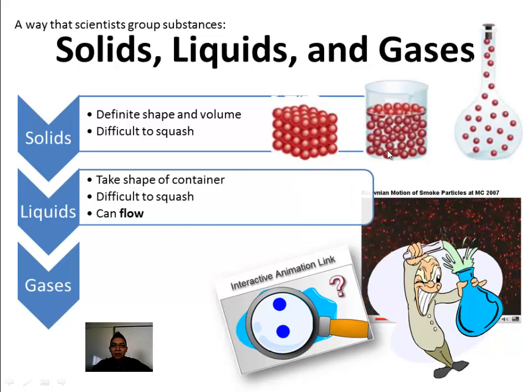Liquids take the shape of the container. If I pour liquids into a bottle like this, random act of kindness, then the liquid takes the shape of whatever container I put it in. That's a characteristic of liquids. It's also difficult to squash, which you can't really tell here, but if you put it into a syringe, it's something we're going to actually try. You can't squash liquid. It moves around, but you can't actually squeeze it down and make it take up less space than it actually does. And liquid can flow.